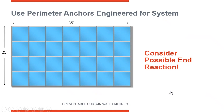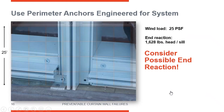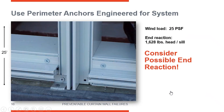Here's an example: a curtain wall elevation with verticals that are 25 feet tall, five feet on center, and a wind load of 25 PSF. When you calculate that, the end reaction at the top and bottom of each of the verticals is just over 1,600 pounds. That's a lot of force. When you see something like that improvised anchor in the field, there's no possible way it could support that vertical when the wind starts to pick up.